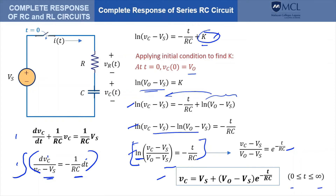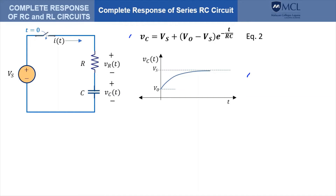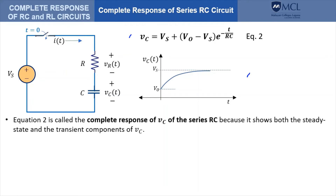V sub C is not valid for T less than 0. We can plot that equation. The voltage starts from an initial value of V sub 0, since at T equals 0 it equals V sub 0, and the voltage increases to a constant value of V sub S over time. Equation 2 is called the complete response of V sub C of the series RC because it shows both the steady state component and the transient component of V sub C.